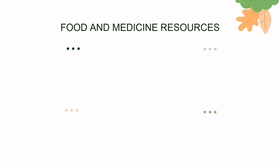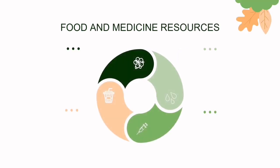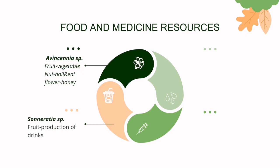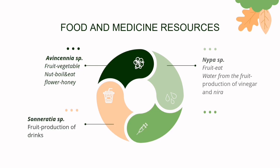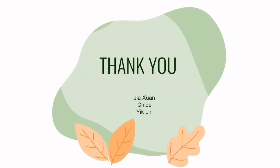Mangrove wood is burnt in furnaces to produce charcoal. Food and medicine resources: the fruit of Avicennia species can be consumed as a vegetable, the nut can be boiled and eaten, and its flower produces honey. The fruit of Sonneratia species is used in the production of drinks. The fruit of Nipa species can be eaten and water from the fruit can be used in the production of vinegar and nira. The bark of Bruguiera species can be used to treat diarrhea.